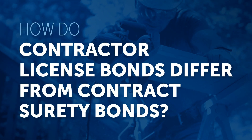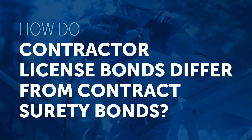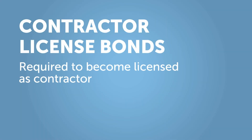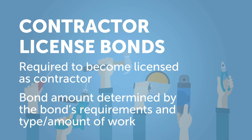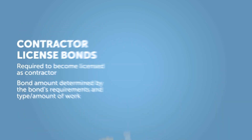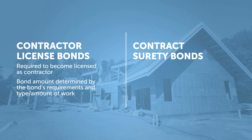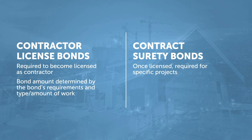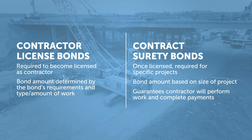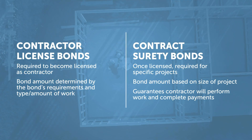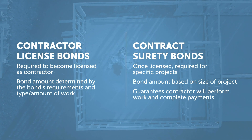How do contractor license bonds differ from contract surety bonds? Contractor license bonds are a type of commercial license and permit bond, and a contractor must have them in place before they can do work in most states. The bond amount can vary based on the bond's requirements, type of work, or amount of work being performed. On the other hand, contract surety bonds are typically required for specific construction projects. The bond amount is based on the size of the project, and the bond guarantees that the contractor will perform the work and will pay subcontractors, laborers, and material suppliers.